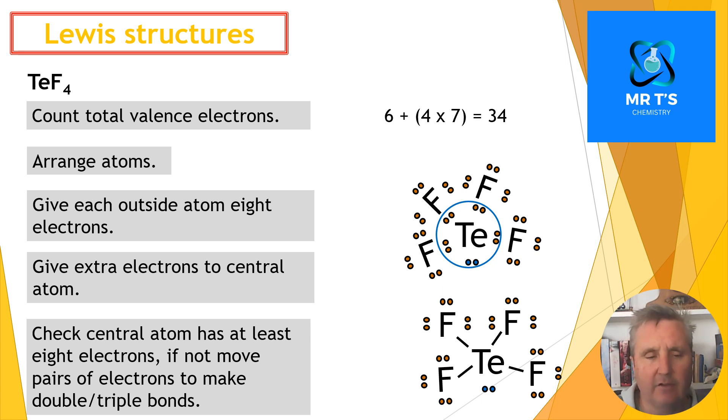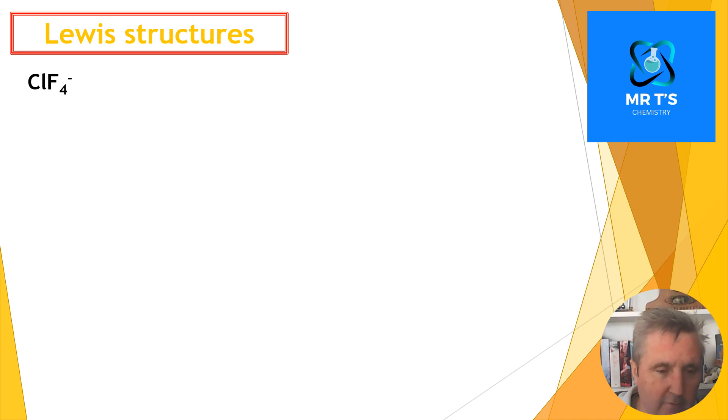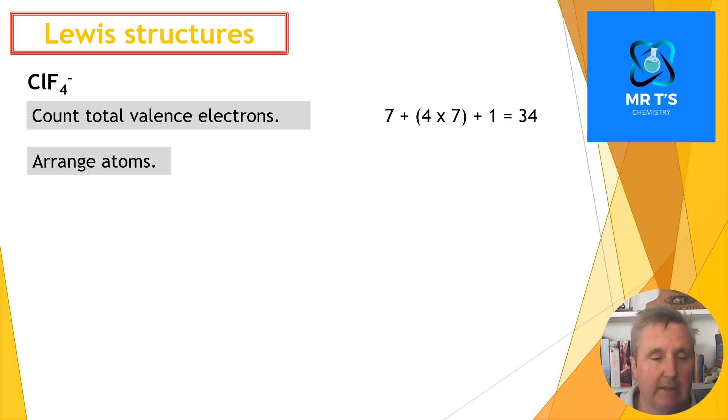The last example: we can draw Lewis structures for ions. When we have an ion, we either have a negative or positive charge. If we have a negative charge, it means we have an excess of electrons, so we add electrons equal to the charge. If we had a positive charge, we have less electrons, so we'd remove electrons equal to the positive charge. In this case it's one negative (ClF4-), so we're going to add one electron. We count one chlorine and four fluorines: that's 34, plus one electron gives us a total of 35.